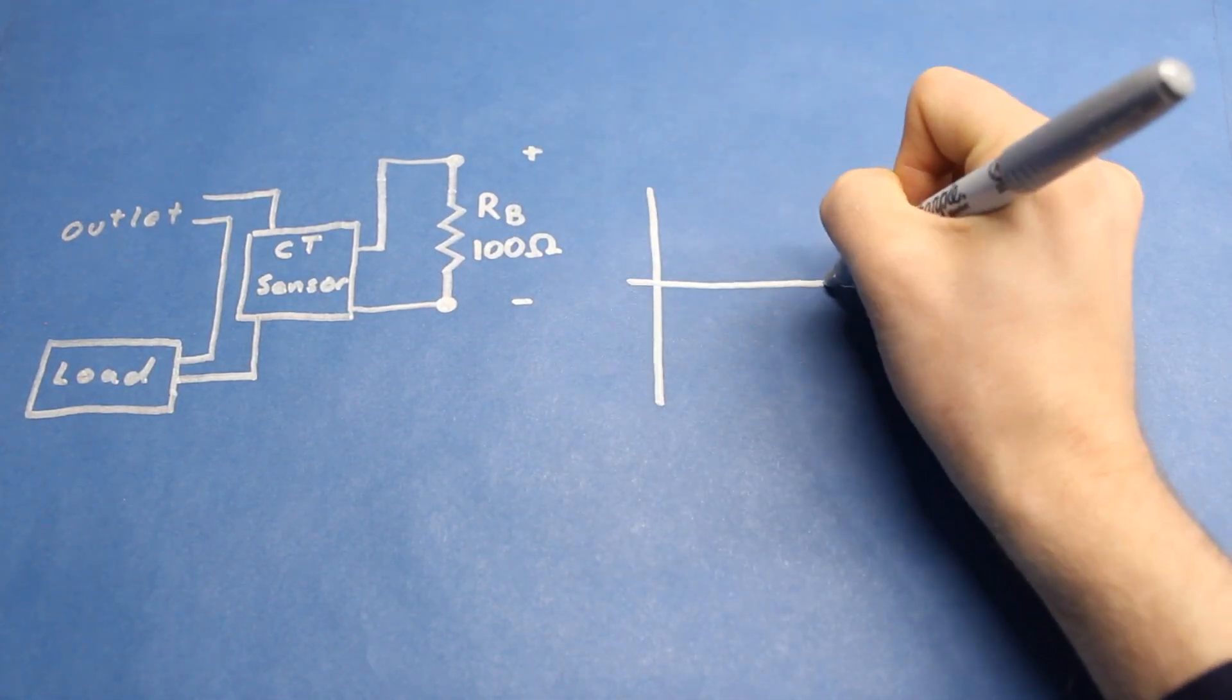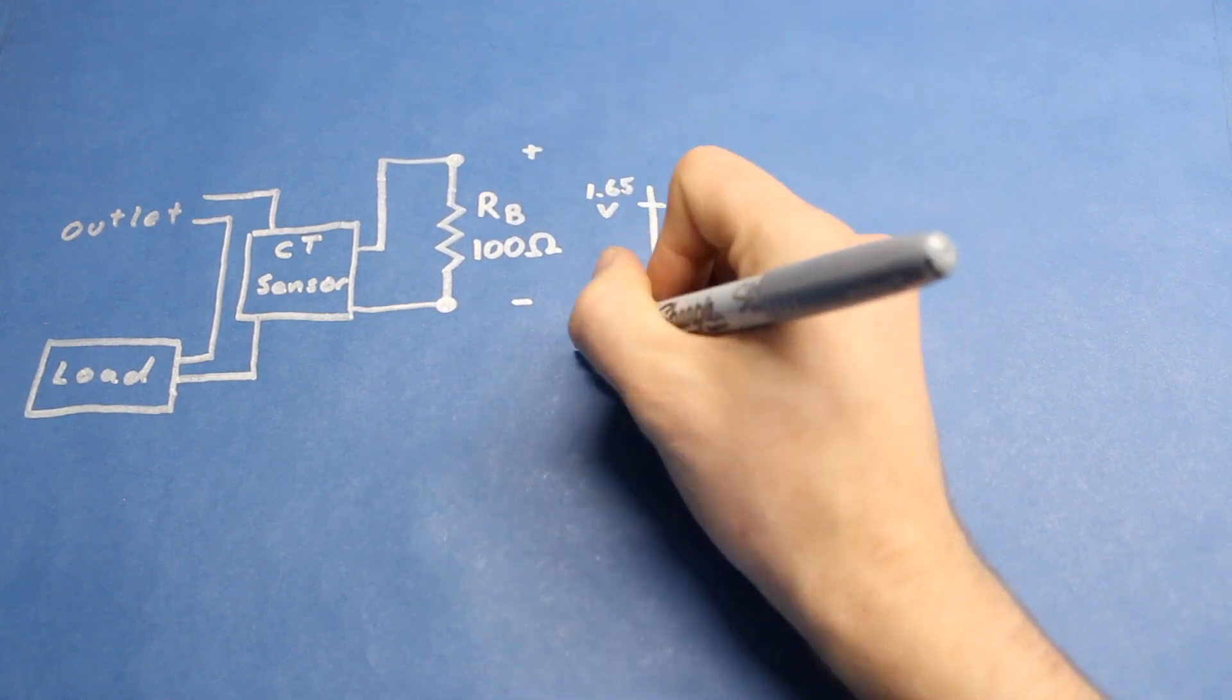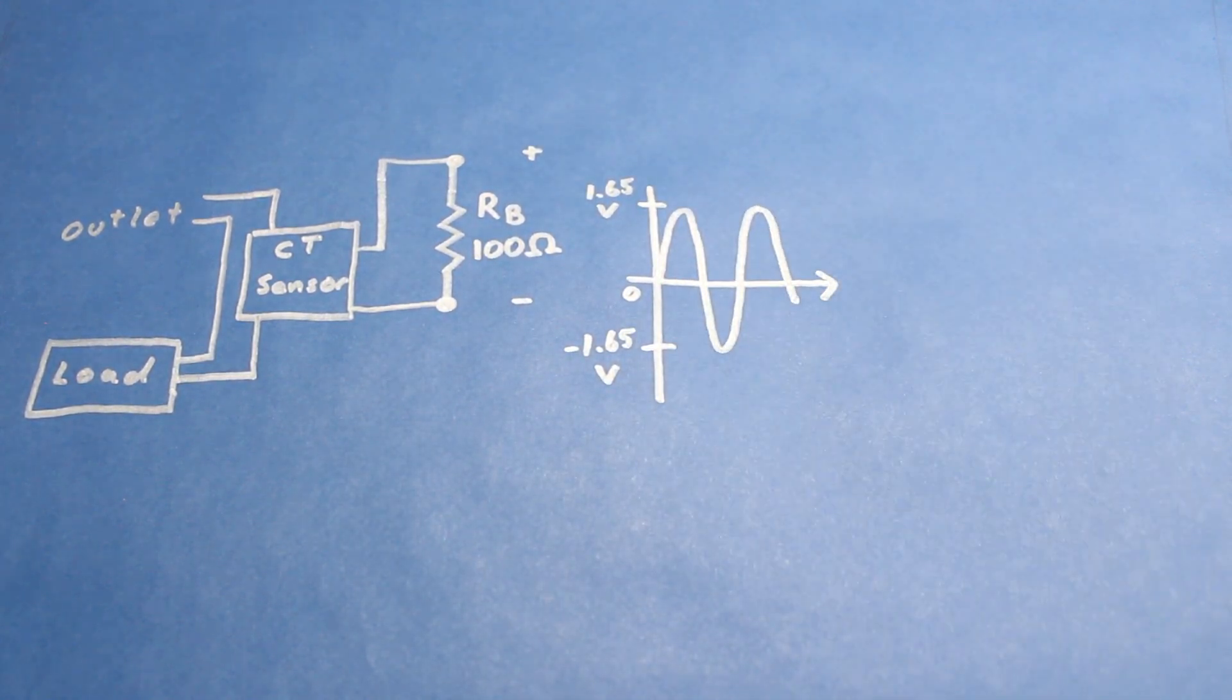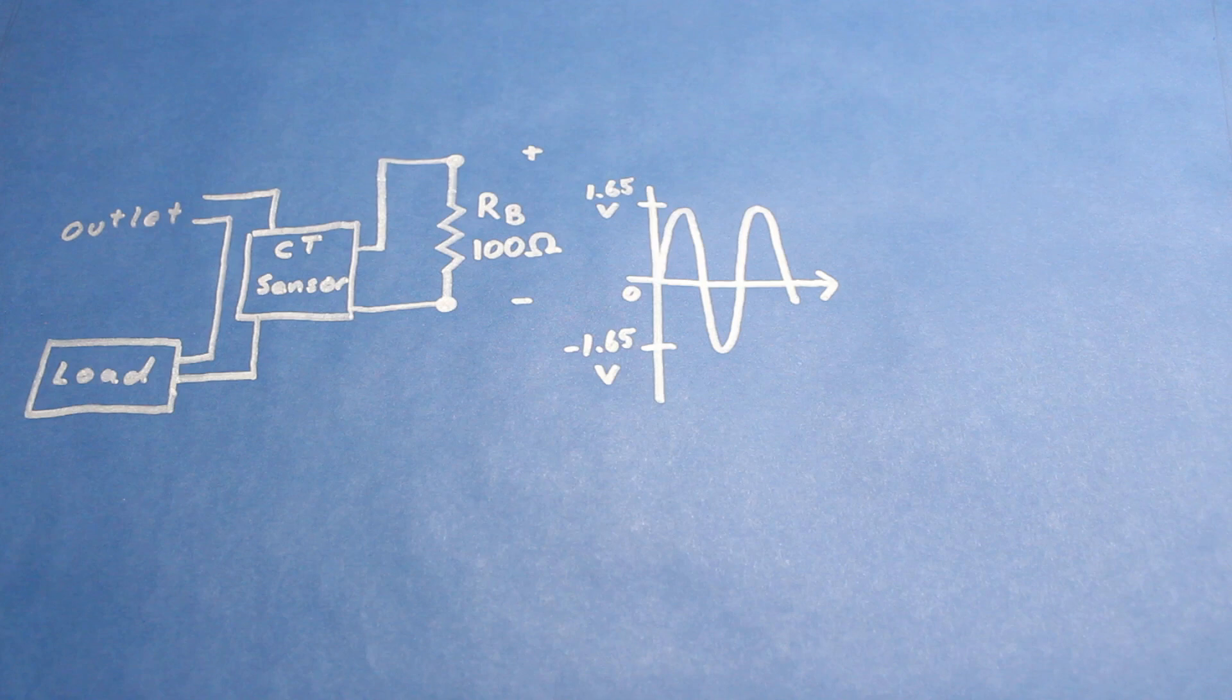You might have noticed that we designed the voltage across RB to swing between positive 1.65 volts and negative 1.65 volts. The problem is that the ADC can't detect negative voltages, so we'll need to offset the voltage by one half of the ADC's max value, and half of 3.3 volts is 1.65 volts. We'll do this by offsetting the reference voltage.